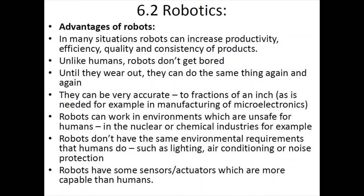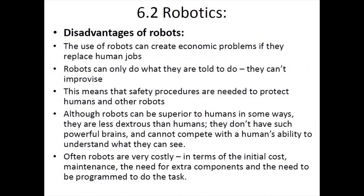Robots also have sensors and actuators more capable than humans. Disadvantages: the use of robots can create economic problems as it causes job loss for humans. They can only do what they are told and cannot improvise or think for themselves, meaning safety procedures are needed to protect humans and other robots in the facility. Although robots can be superior to humans in some ways, they are less dexterous — they lack powerful brains, cannot make on-the-spot decisions, and cannot compete with a human's ability to understand what they see.